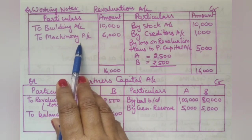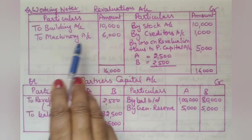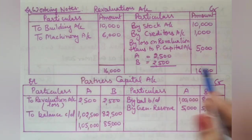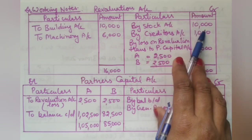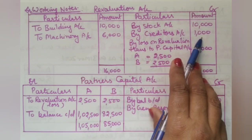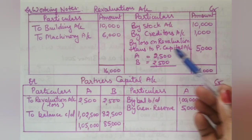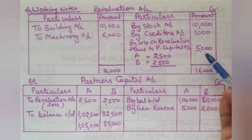In the revaluation account, on the debit side we record decreases in asset values: building reduced by 10,000 rupees and machinery reduced by 6,000 rupees. On the credit side: stock increased by 10,000 rupees and creditors reduced by 1,000 rupees. Total debit side is 16,000 rupees and total credit side is 11,000 rupees — resulting in a revaluation loss of 5,000 rupees.